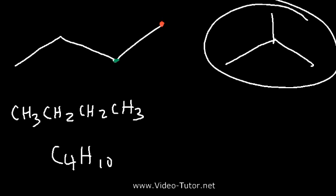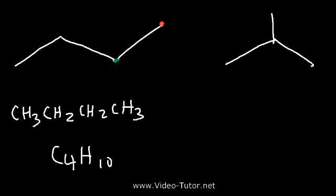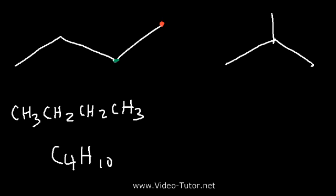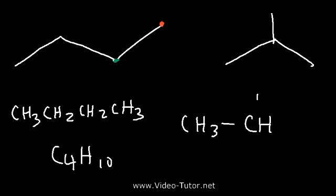Now what about the other isomer? The carbons at the end are CH3s — primary carbons attached to only one other carbon, so they have three hydrogens. The one in the middle is a tertiary carbon attached to three carbon atoms, so it can only be bonded to one hydrogen to have four bonds total. So if we draw the structure, we have a CH in the middle and three methyl groups attached to it.